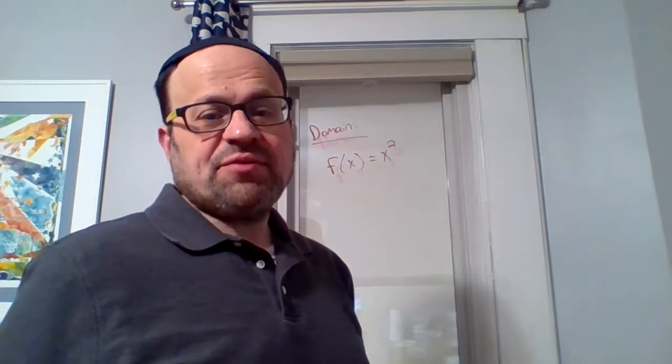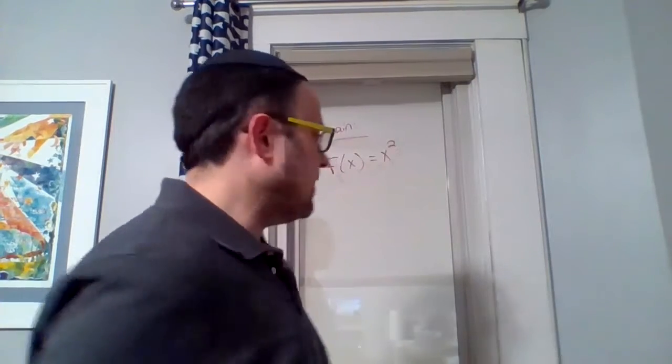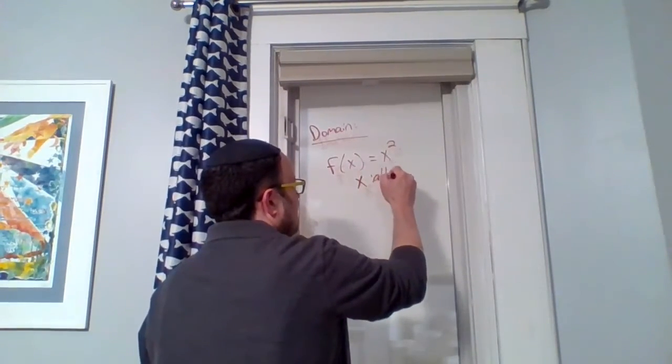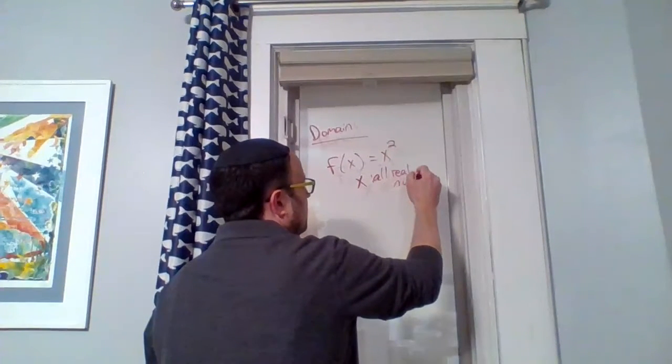Can x be three? We can have three squared. Can x be negative three? Sure, we could also have negative three. So x, we would say, is all real numbers.